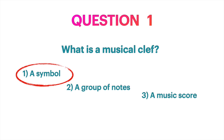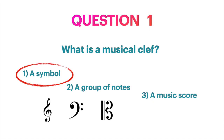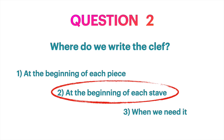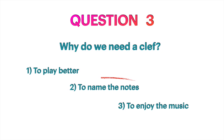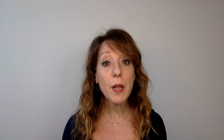Question 1: What is a musical clef? A symbol. These are the symbols of the possible clefs. In my first video, I say a clef is the symbol that we write at the beginning of each stave. And this gives us the answer to Question 2: Where do we write the clef? At the beginning of each stave. Question 3: Why do we need a clef? To name the notes. Because without a clef, it's not possible to give a note a name — no clefs, no notes.